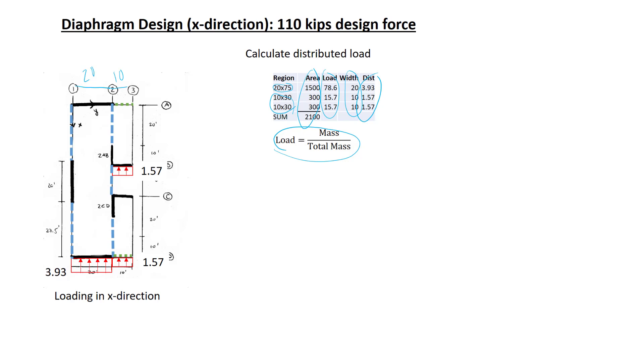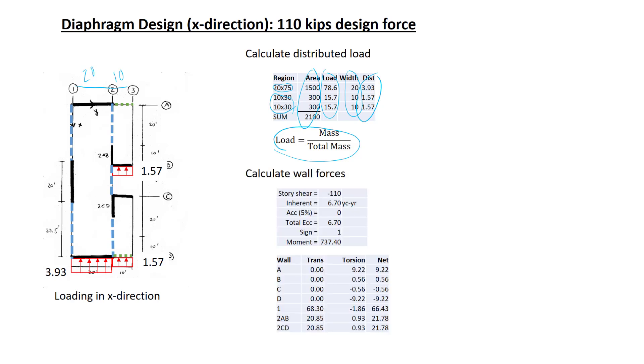Next, we need to find the forces in the lateral force-resisting elements. This will be a little bit different than in the y direction. Because of the eccentricity, torsion will come into play. In the y direction, it was sufficient to simply say that the forces were proportional to rigidity. Here we have to do a full analysis with torsion. So we repeat the same kind of calculation that we did before. We only include the inherent eccentricity.